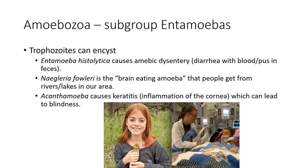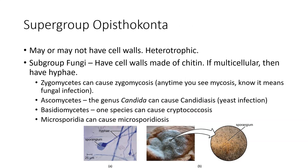Entamoeba histolytica is what causes amoebic dysentery — if you're unfamiliar with dysentery, just go play Oregon Trail, because you're always going to die of dysentery in that game. Acanthamoeba causes keratitis, which is inflammation of the cornea — the clear window to the eye. If you inflame that, it can make it opaque so you can't see anymore.